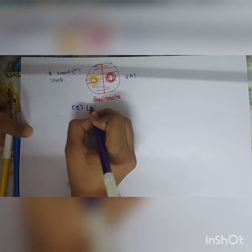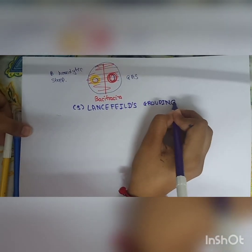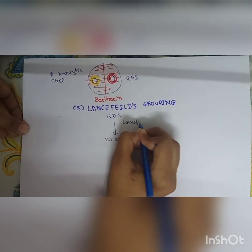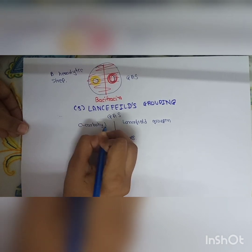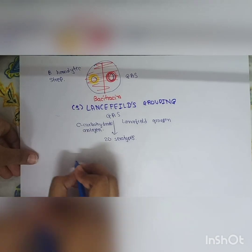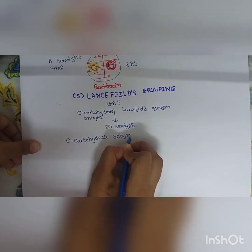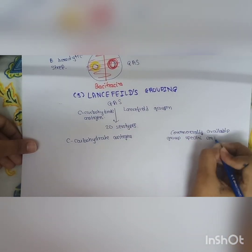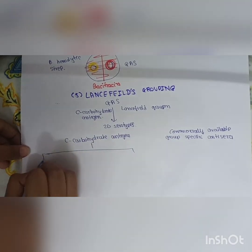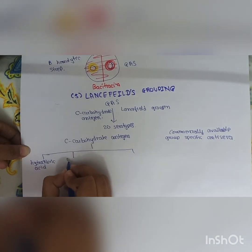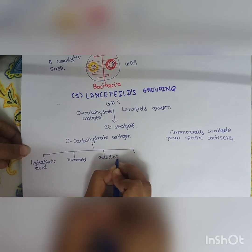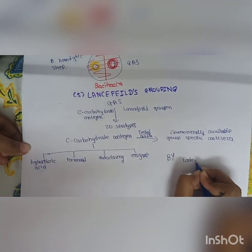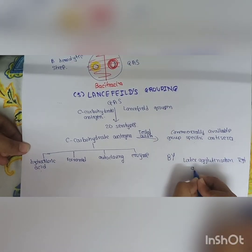The sixth method is Lancefield grouping. We identify the carbohydrate antigen: GAS is classified into 20 serotypes A to B based on C carbohydrate antigen. We must extract this C carbohydrate antigen — by hydrochloric acid, formamide, autoclaving, or enzyme — then test it with commercially available group-specific antisera using latex agglutination test or ring precipitation test.